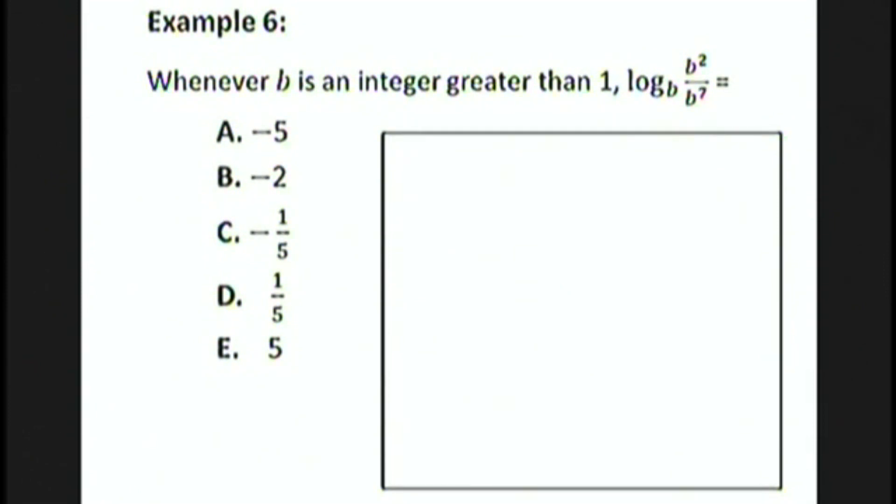One more example. Whenever b is an integer greater than 1, log base b of b squared over b to the 7th is? Well, we could simply start by dividing b squared by b to the 7th. We use the law of exponents that says when you divide two expressions with the same base, you subtract the exponents. 2 minus 7 is negative 5.